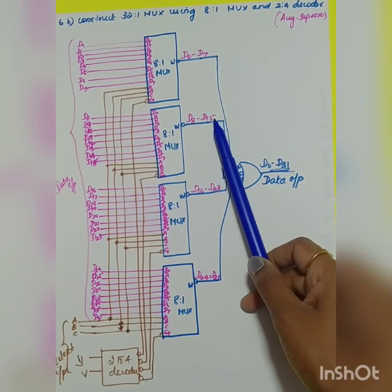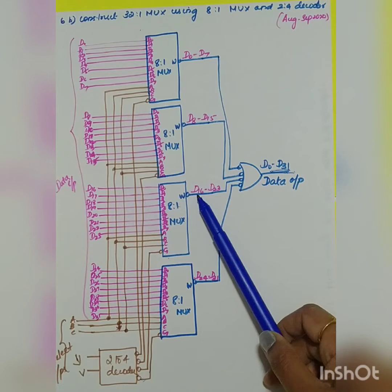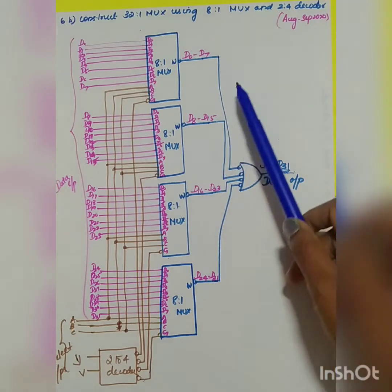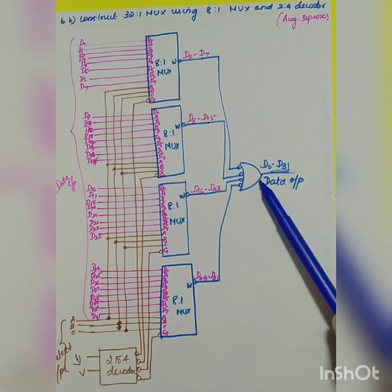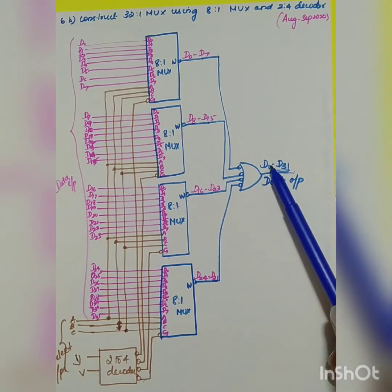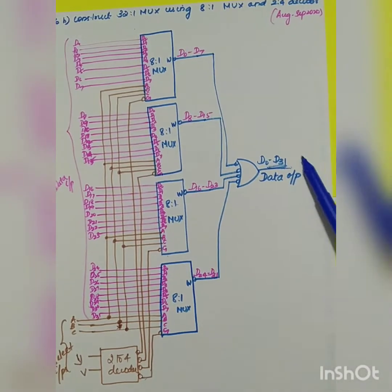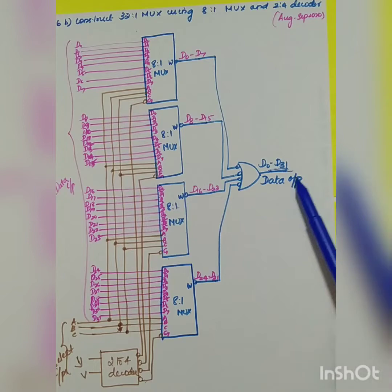The second MUX will select data between d8 to d15, the third MUX from d16 to d23, and the fourth MUX from d24 to d31. All active low outputs will be ORed together to give you d0 to d31, allowing you to select a total of d0 to d31 output from the OR gate.